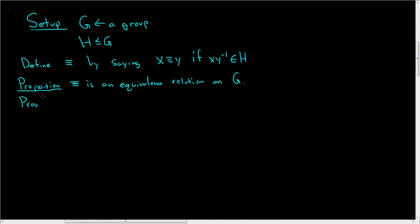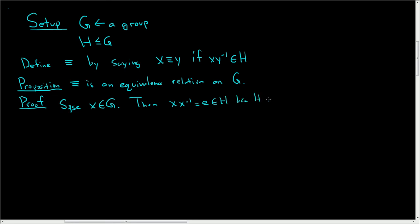Let's prove that carefully. To show it's an equivalence relation, we have to show it's reflexive, symmetric, and transitive. Starting with reflexivity: suppose x is in G. Then x times x inverse is the identity element, which is certainly in H because H is a subgroup. So x is related to x, and since this holds for all x in G, our relation is reflexive.